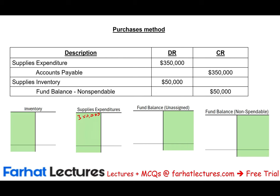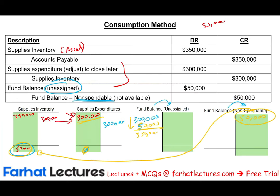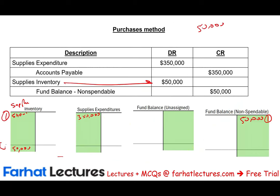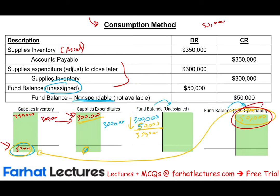At the end of the year under the purchase method, I make an adjustment. I find out I still have $50,000 worth of inventory. So I debit supplies inventory $50,000, giving it a $50,000 balance, and I credit fund balance non-spendable $50,000. So under both the consumption method and the purchase method, I have $50,000 of inventory and $50,000 of fund balance non-spendable.